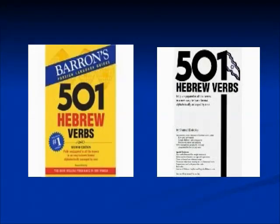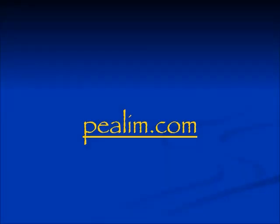Previously I had recommended the Barron's 501 Hebrew Verbs, and if you'd like to have a book in your hand or if you might be at some place where you don't have internet access, it's nice to have these books so you can look at how the different verbs break down. It is oriented to modern Hebrew. I've also since discovered this website pealim.com and it supposedly covers about 5,000 verbs. It's also oriented to modern Hebrew and has modern Hebrew spelling, but it is very helpful.